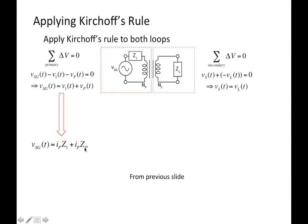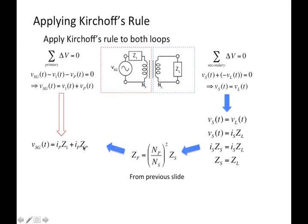We can apply Ohm's Law. We know impedance one, and we're looking for the current through the primary, which is the same as the current through impedance one. Again, we need the impedance of the primary. We go through the same steps as before: the impedance of the secondary is just the impedance of the load, and we know the relationship of the primary to secondary impedance, related by the ratio of turns.